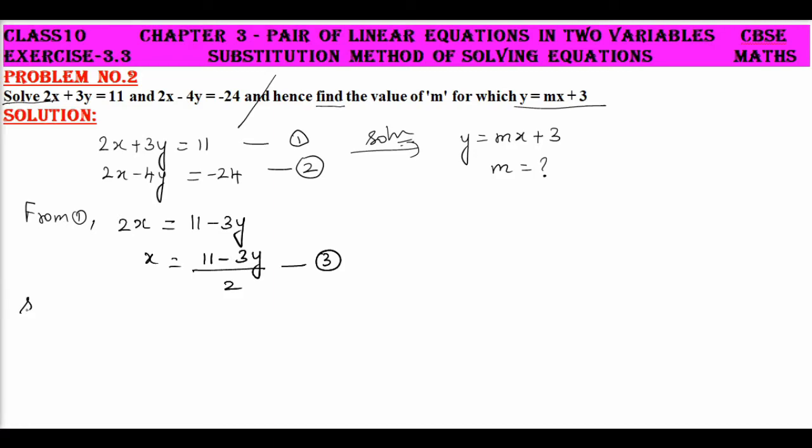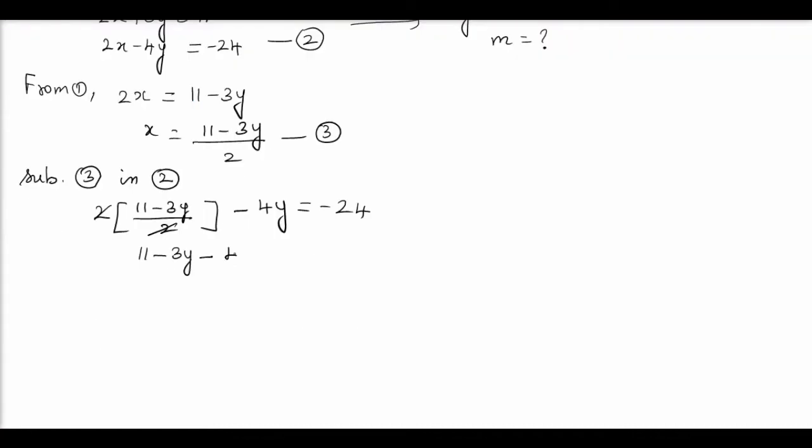Now let me substitute equation 3 in equation 2. So I get 2 into 11 minus 3y by 2 minus 4y equals minus 24. Here we can cancel 2. Therefore, we get 11 minus 3y minus 4y equals minus 24.